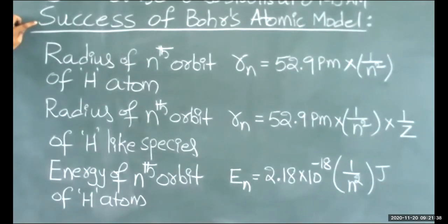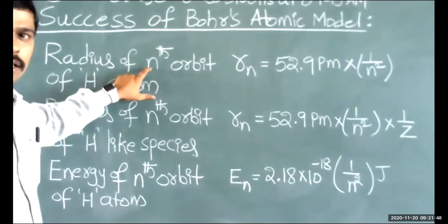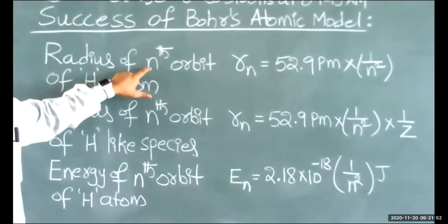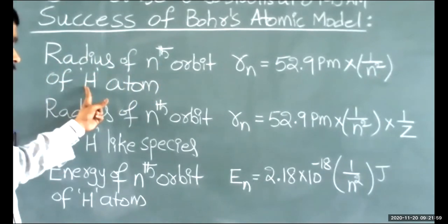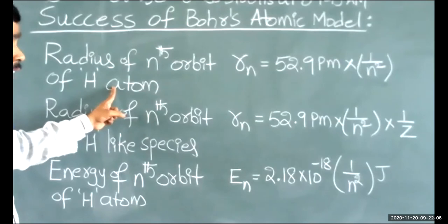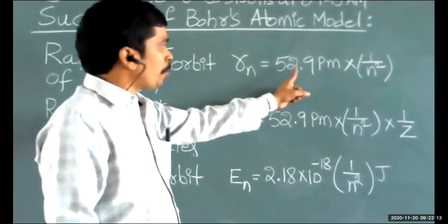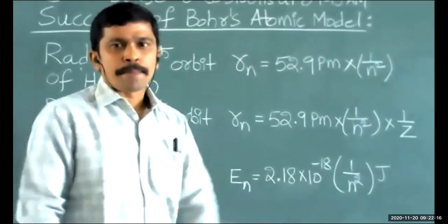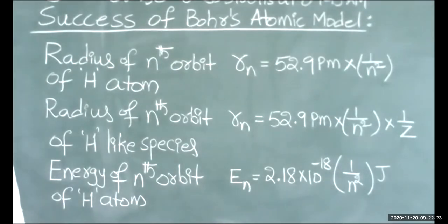Niels Bohr succeeded in calculating the radius of orbit — here I'm saying radius of nth orbit, where n stands for either the first orbit, second orbit, third orbit, and so on. The radius of nth orbit of hydrogen atom is calculated using the formula rn, which is equal to 52.9 picometers. Picometers means 10 to the power of minus 12 meters.